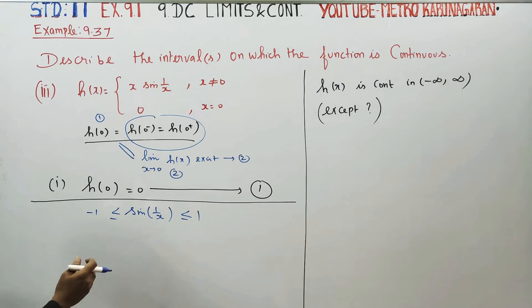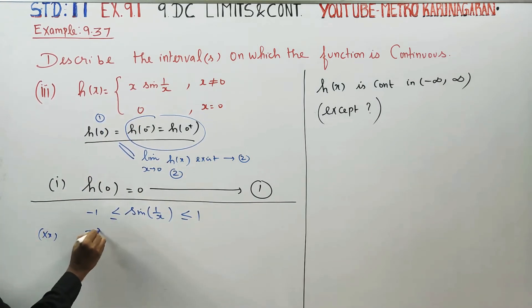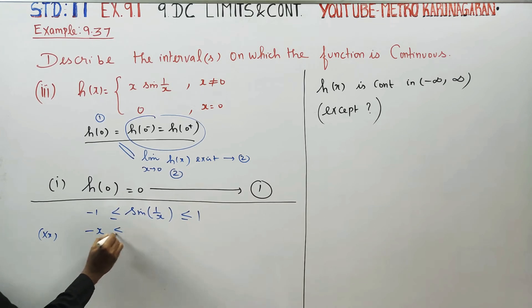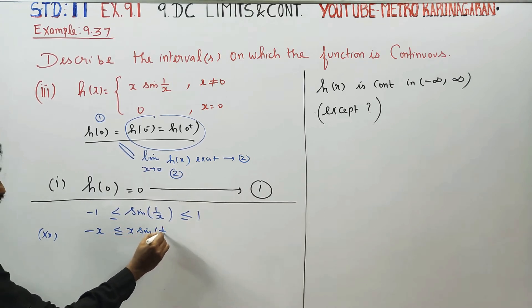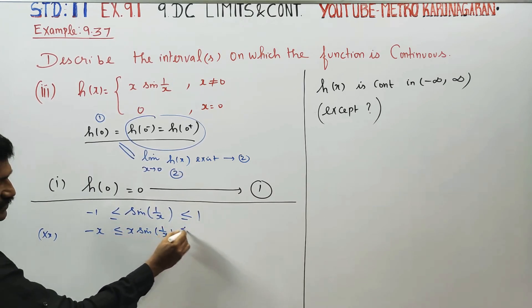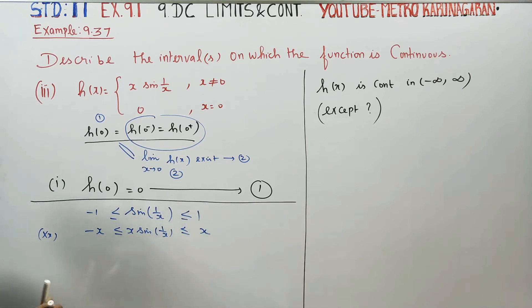Multiply all the terms by x. So: minus x ≤ x·sin(1/x) ≤ x.